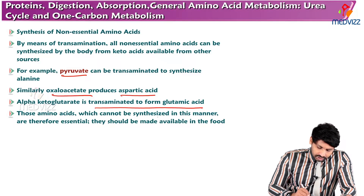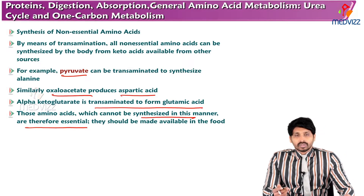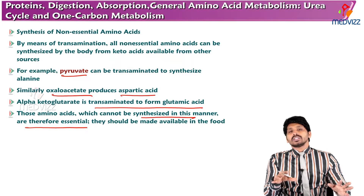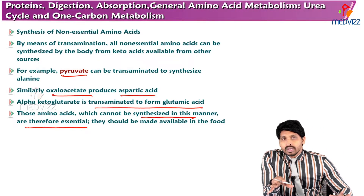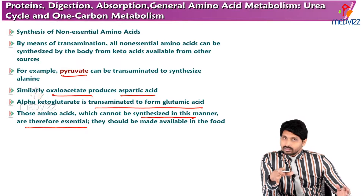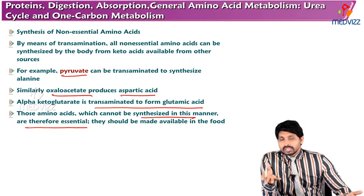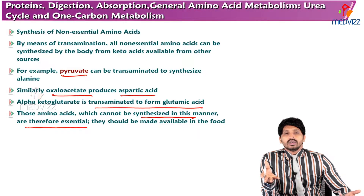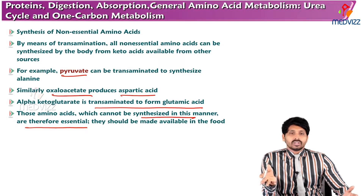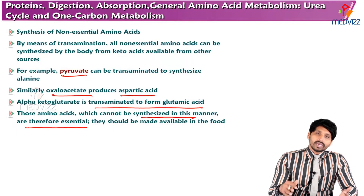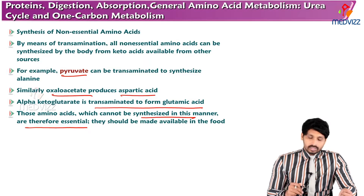Amino acids which cannot be synthesized in this manner are therefore essential. All non-essential amino acids may be synthesized via transamination reactions. If this mechanism is not functioning for production of certain amino acids, they are essential in nature and must be provided in the diet.